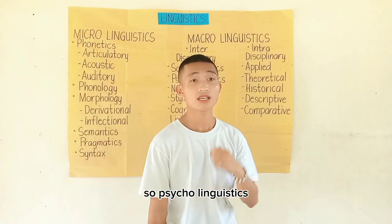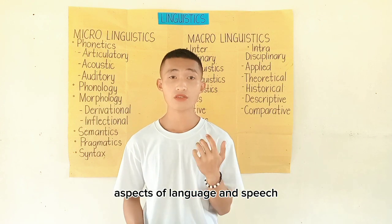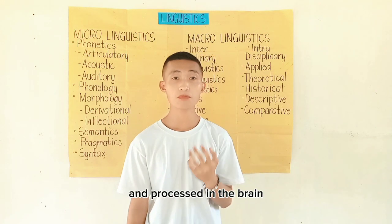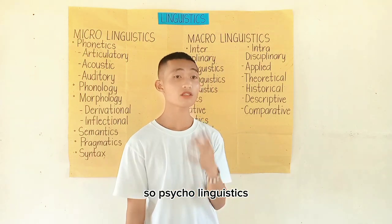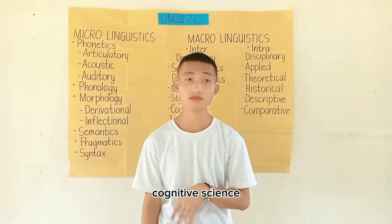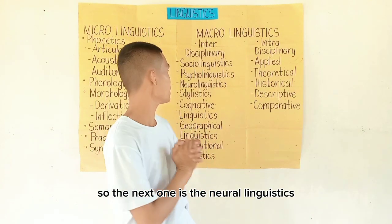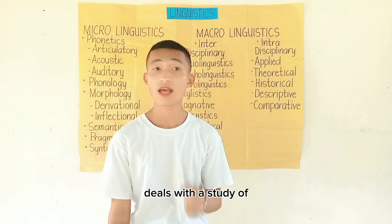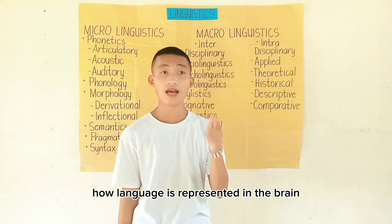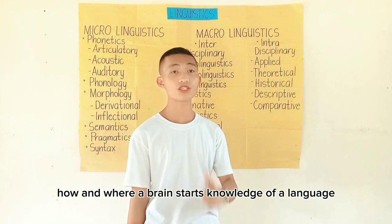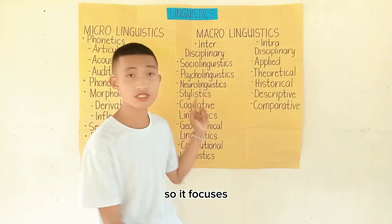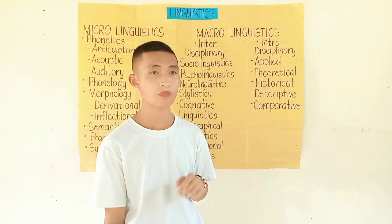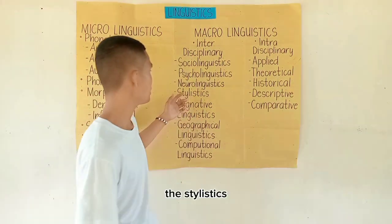Psycholinguistics deals with the study of mental aspects of language and speech. Each domain is concerned with how language is represented and processed in the brain. Psycholinguistics is part of the field of cognitive science. Neurolinguistics deals with how language is represented in the brain — how and where the brain stores knowledge of a language and what happens as we put this knowledge into practice.